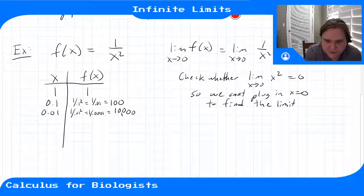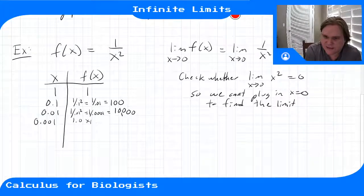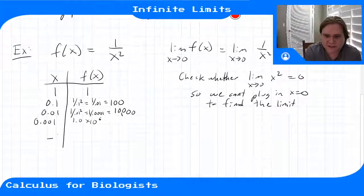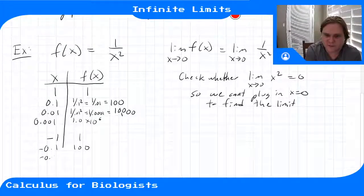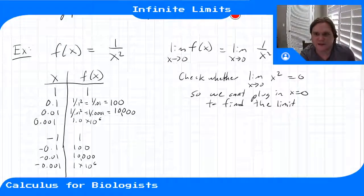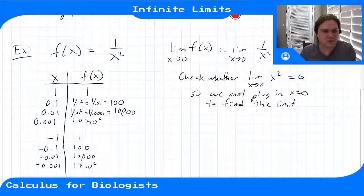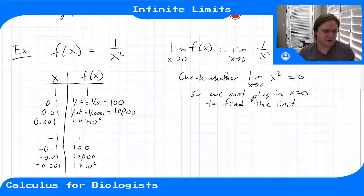It's 10,000, and if I get even closer to 0 — say x equals 0.001 — this gives me 1 times 10 to the sixth. So as I get closer to 0, these numbers are just exploding, getting gigantic. And if I go from the other side, starting from negative 1, f(x) is 1 since the negative gets cancelled by the square. At negative 0.1 it's 100, at negative 0.01 it's 10,000, so these are the same values because of the square. From both the left and the right of 0, the function values are increasing without bound as we approach 0.